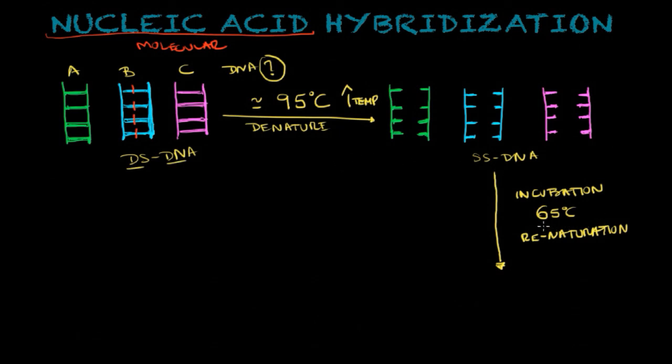You have to have an optimal temperature to do so. Now the trick here is that in this step, you're going to introduce something very important in nucleic acid hybridization, and this is a radioactive DNA probe.